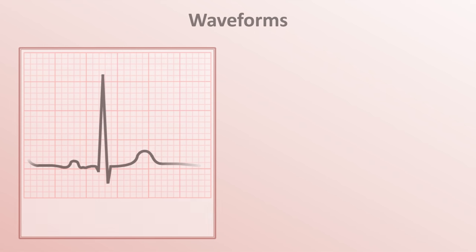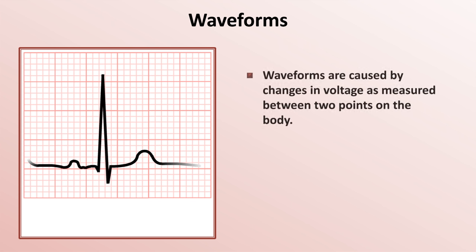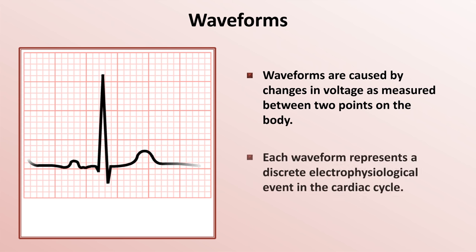So here is that repeating unit up close. Those three deflections of the line are known as waveforms. Waveforms are caused by changes in voltage as measured between two points on the body. Each waveform represents a discrete electrophysiological event in the cardiac cycle.